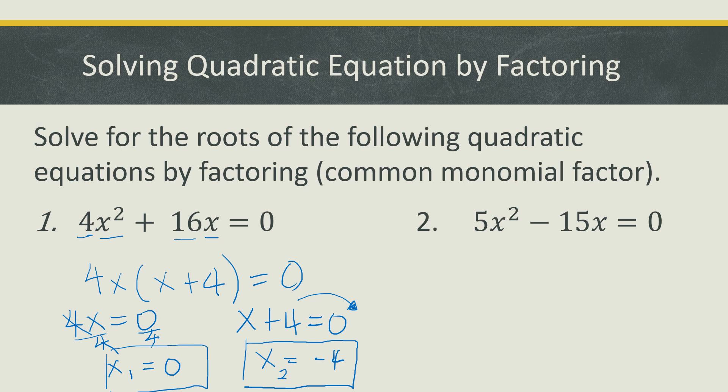Let us now proceed with the second example: 5x² - 15x = 0. Again, first get the common factor of each term. The common monomial factor of 5x² and -15x is 5x. Dividing: 5x² ÷ 5x = x, and -15x ÷ 5x = -3. This gives us 5x(x - 3) = 0.